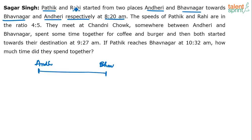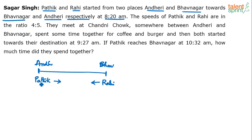So Pathik started from Andheri going towards Bhavanagar. Rahi started from Bhavanagar going towards Andheri. Both of them started at 8:20am. That's obvious that when they're traveling in opposite directions, they will meet somewhere in between.